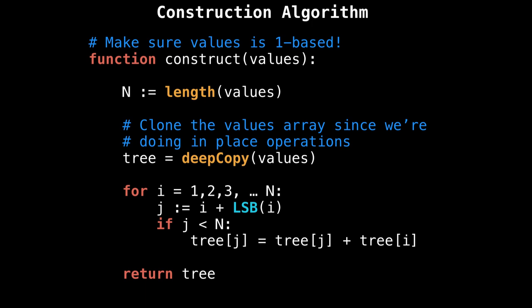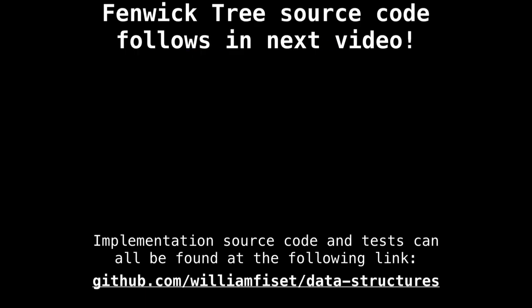So clone the values array and then start i at one and go up to N and then compute j, the parent, which is i plus the least significant bit of i. Do an if statement to check if j is less than N. That might actually be less than or equal to N. Now I'm thinking about it because everything is one-based in a Fenwick tree. Yeah, I'm pretty sure that should be less than or equal to N.